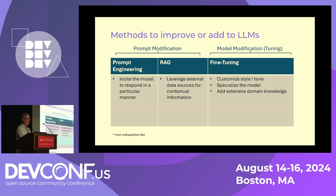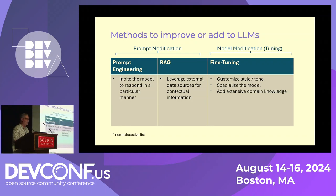Different methods exist to improve large language models. People spend months building the largest ones — it's very expensive — but the result is general purpose. If it doesn't quite fit your needs, one method is prompt engineering: you tell the language model what you're expecting, and if you give it a couple of examples, it does a much better job responding appropriately. I've seen this with coding and SQL examples — if you give it your table names and database context, the results are much more usable.